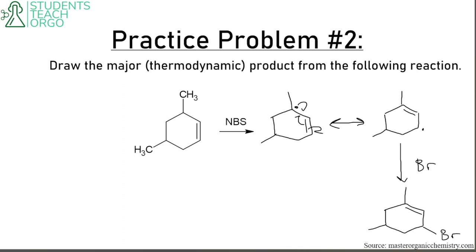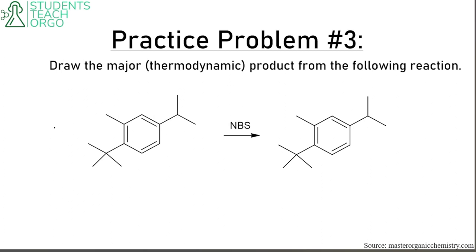Let's draw the most stable thermodynamic product from another reaction. You might be tempted to brominate multiple times — remember, NBS only adds once, at the most stable position. The most stable radical here is this benzylic radical. Even though there is another benzylic position, it has no hydrogen, so we wouldn't add there. This benzylic position is better because it is more substituted. Then you add your bromine.